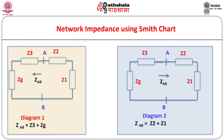Many times, while specifying the network impedance, the phrase 'as seen from so-and-so terminals' is used. To remove any ambiguity, an arrowhead can be used indicating the direction of measurement of the network impedance. One can assume that the current enters the network from one terminal and exits from the other. In diagram 1, ZAB = Z3 + ZG, while in diagram 2, ZAB = Z1 + Z2.